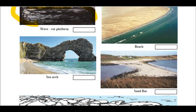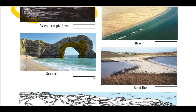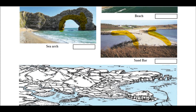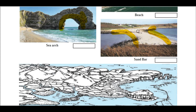Here you can observe a sea arch more clearly. You can see the rock portion, and if there is a crack or weak portion in the rock, continuous hitting by sea waves causes that part to collapse, forming an arc-like structure — that is a sea arch, formed by the erosional action of sea waves. A sand bar is a bar-like structure connecting two small land masses separated by a water body, formed by deposition of sand due to sea waves. You may have seen sand bars in many movie scenes.